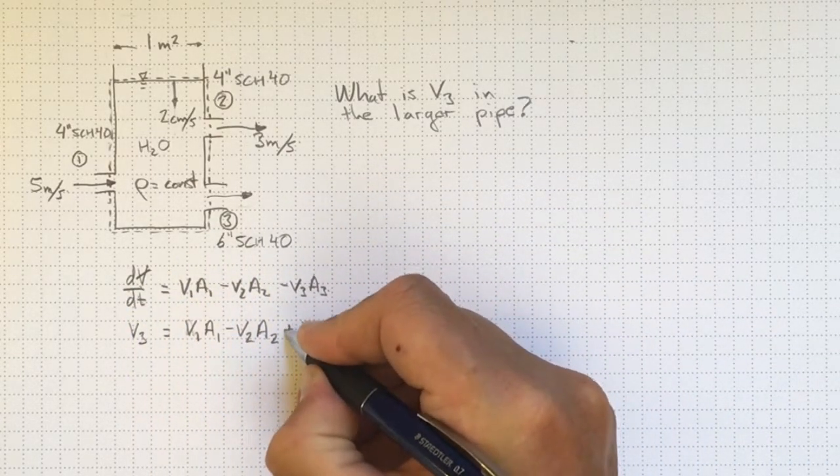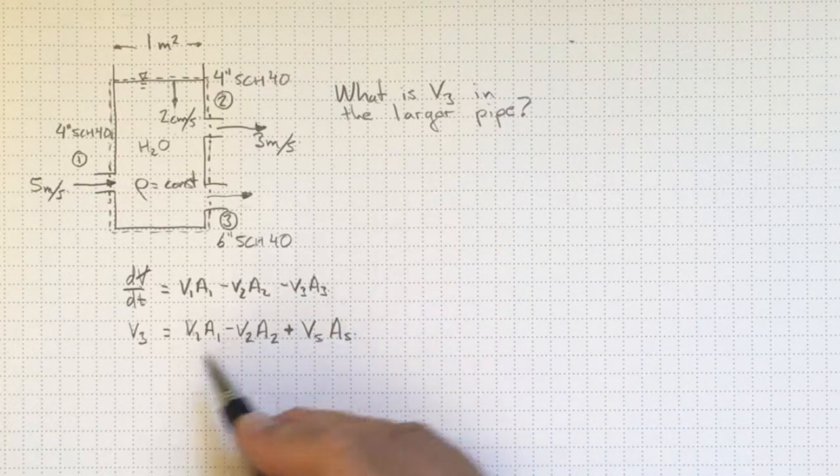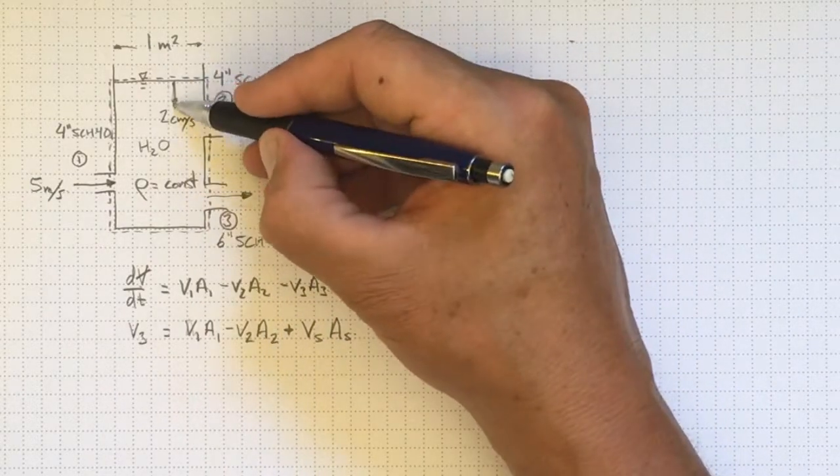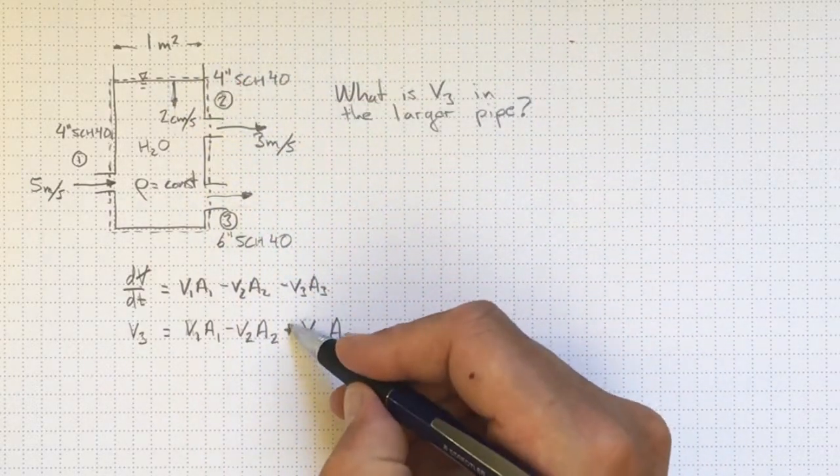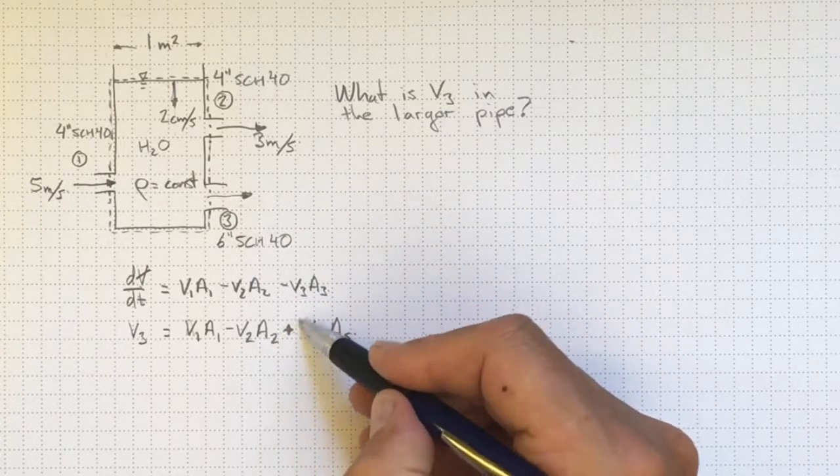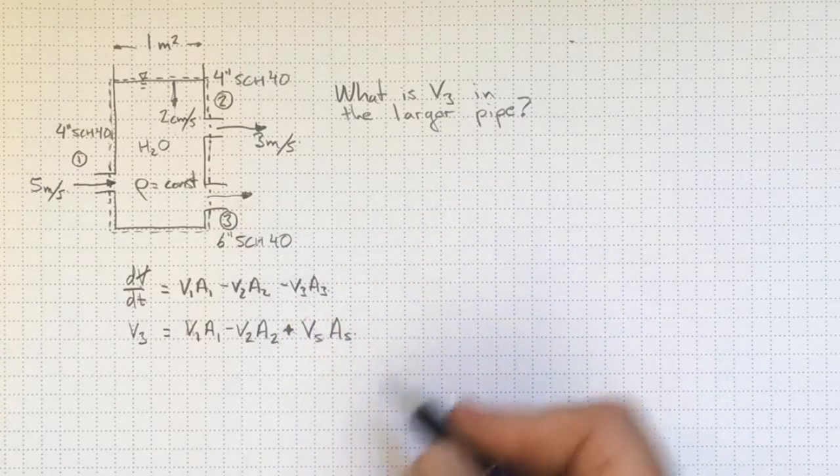The bigger this is, the bigger V3 is going to be if I take this velocity in this sense. So I've got the sign right. So always check on these ones, this is where you're most likely to make mistakes is getting signs like that wrong.